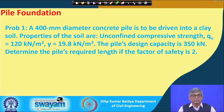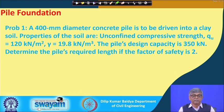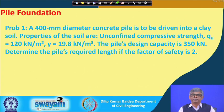The first problem: a 400 millimeter diameter concrete pile is to be driven into a clay soil. The properties of the soil are unconfined compressive strength q_u = 120 kN/m², unit weight γ = 19.8 kN/m³, and the pile's design capacity is 350 kN. Determine the pile's required length if the factor of safety is 2. This is a pile driven in cohesive soil, where total capacity comes from frictional resistance and base resistance. The cohesion is not directly given.